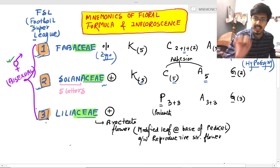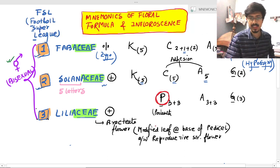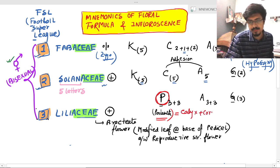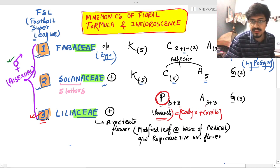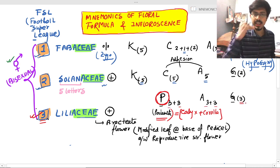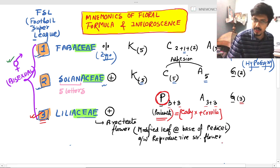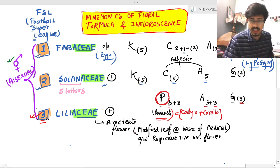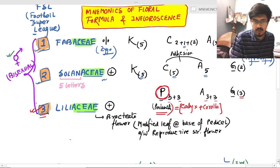The third one is Liliaceae. One special feature is that in Liliaceae you can see the Perianth. Perianth is nothing but the fused Calyx and Corolla — when Calyx and Corolla are attached together, it is called Perianth. Also, Liliaceae has a bracteate flower — a bract is a modified leaf at the base of the pedicel, associated with the reproductive structure.